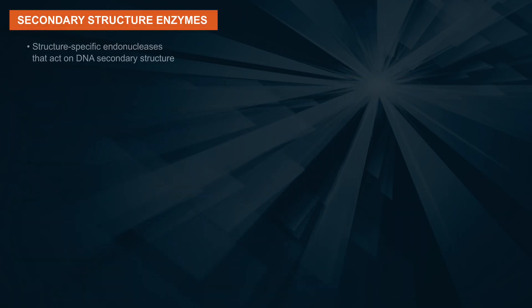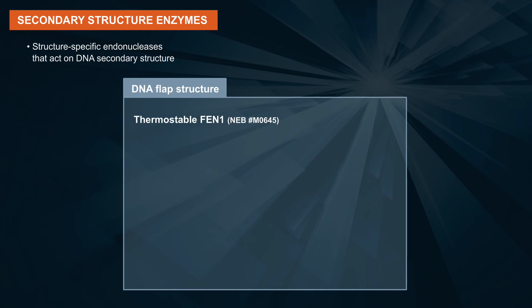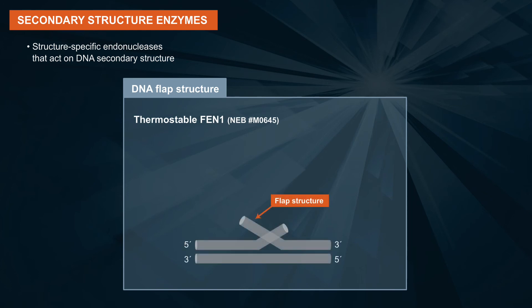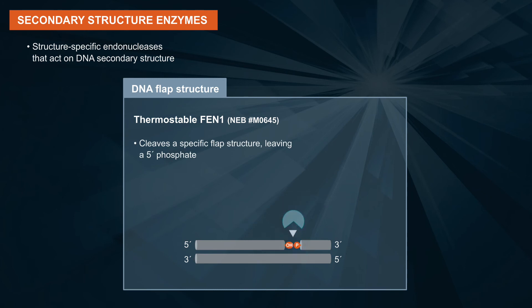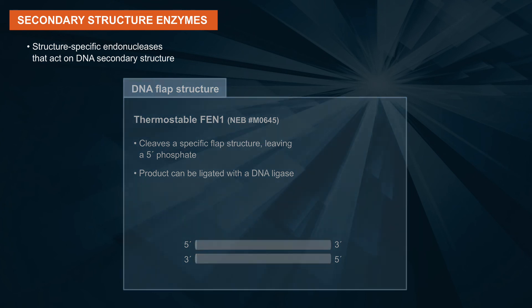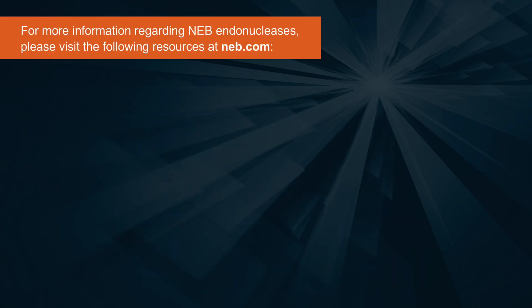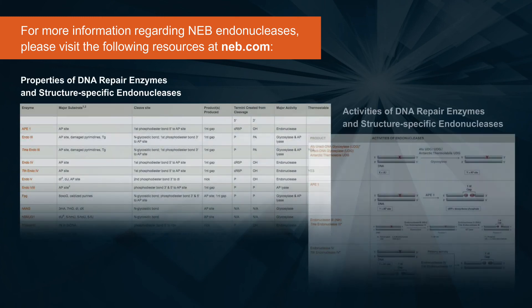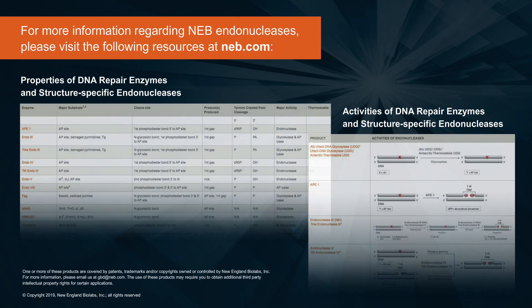Aside from DNA repair enzymes, there are also structure-specific endonucleases that act on DNA secondary structure. Thermostable FEN1, for example, recognizes a specific flap structure and cleaves this flap, leaving a 5' phosphate which can then be ligated with a DNA ligase. For more information regarding NEB endonucleases, please visit the following resources at neb.com.